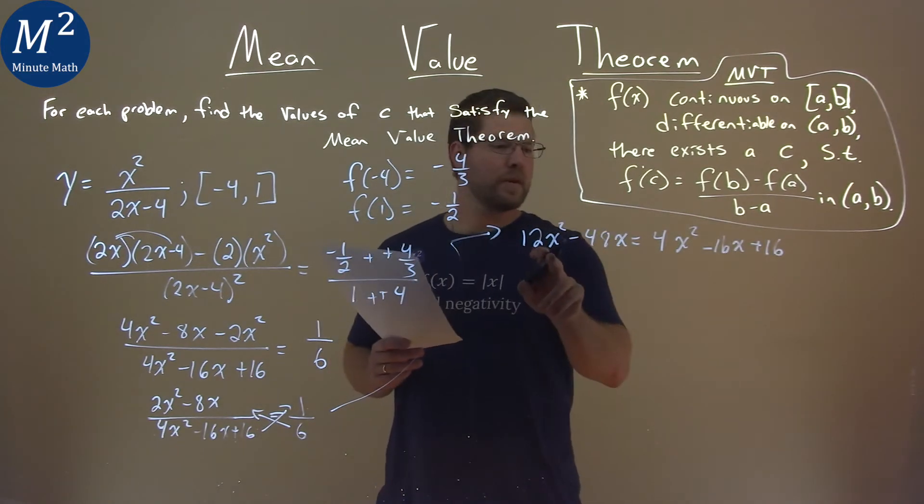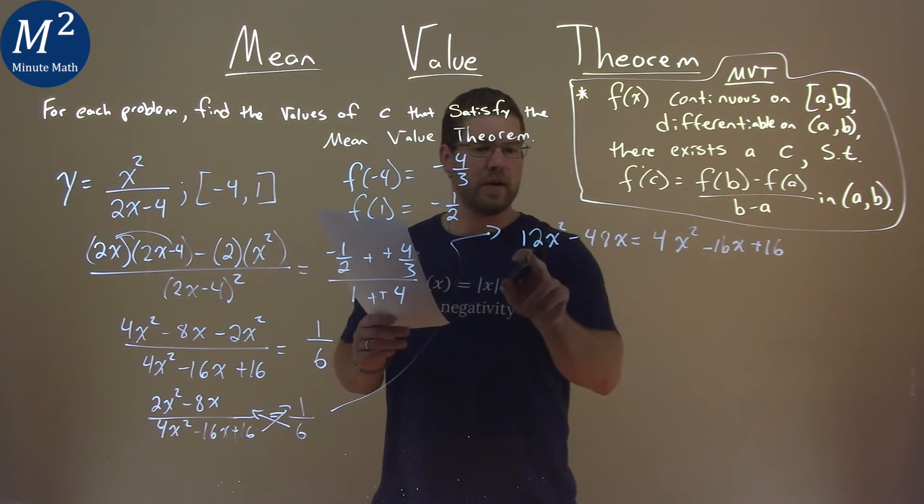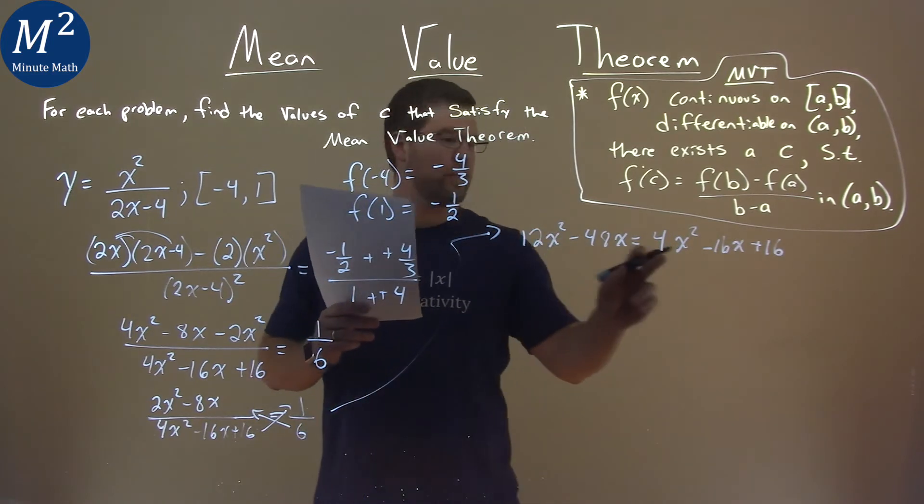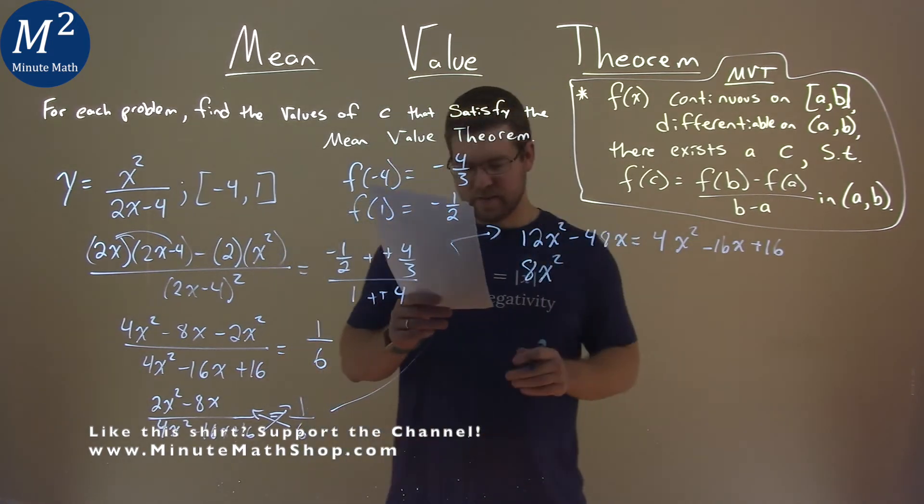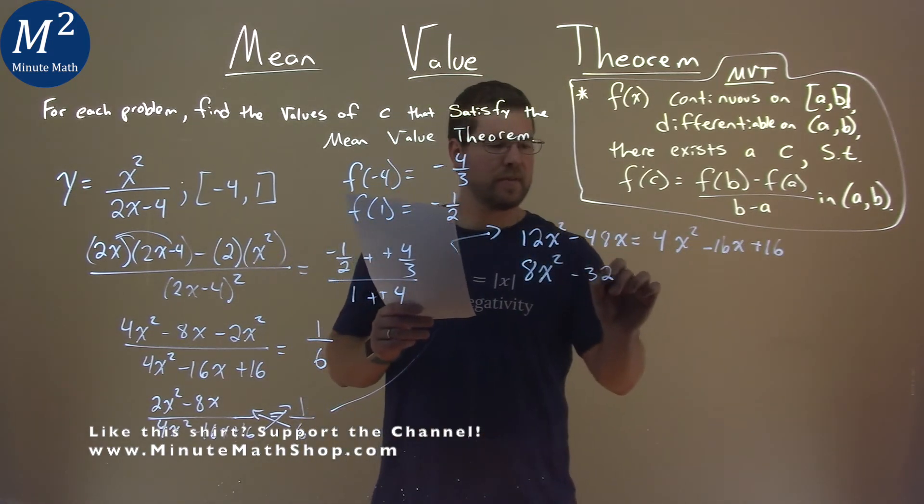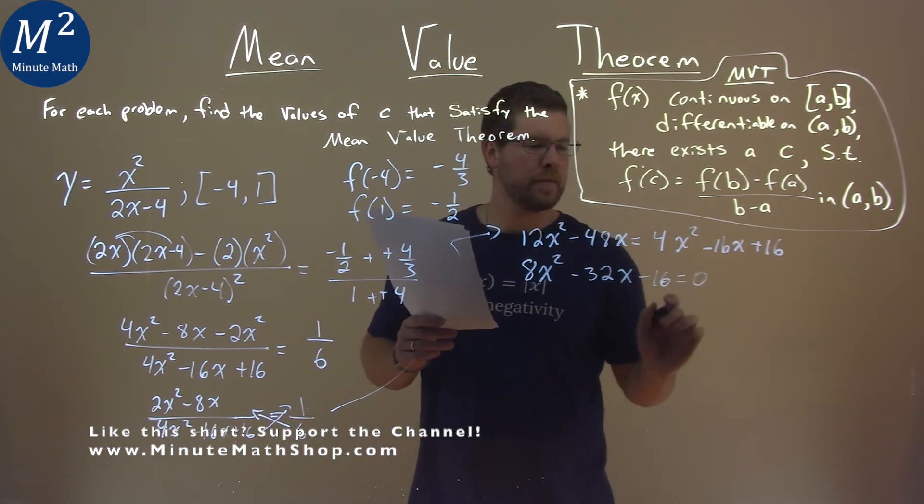Now, from here, we go combine our like terms. So, I'm going to subtract everything over. So, minus the 4x from the 12x squared, or 4x squared, 12x squared is 8x squared here. Add 16x to both sides, and I have minus 32x now, and then subtract the 16 over here, equals 0.